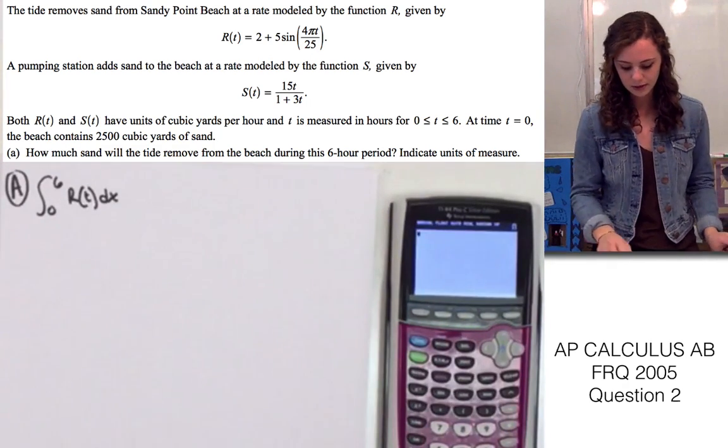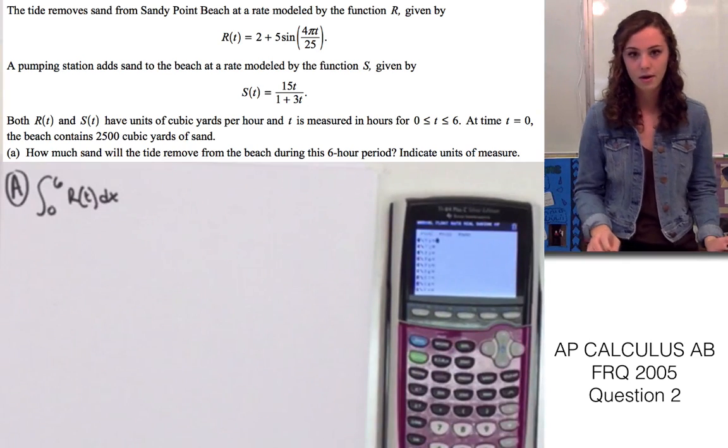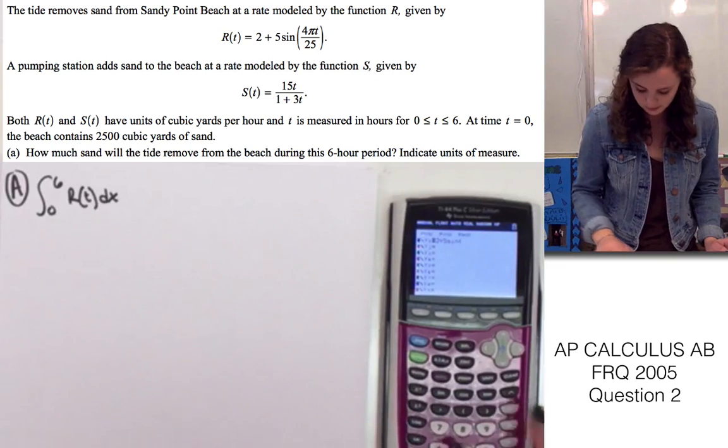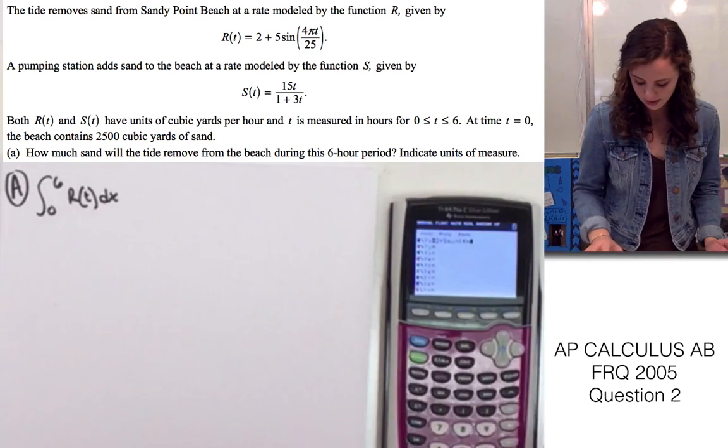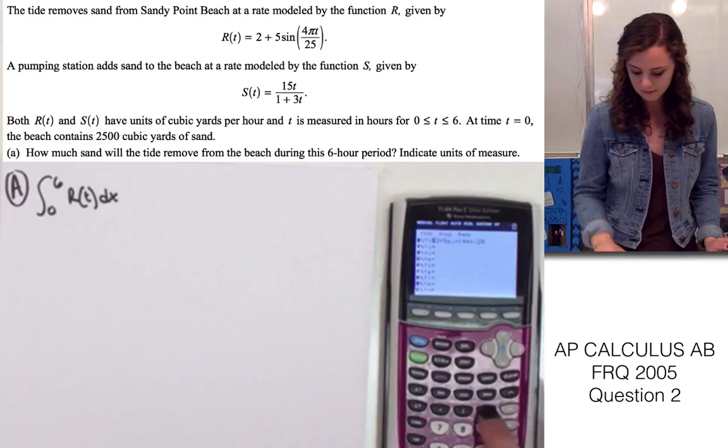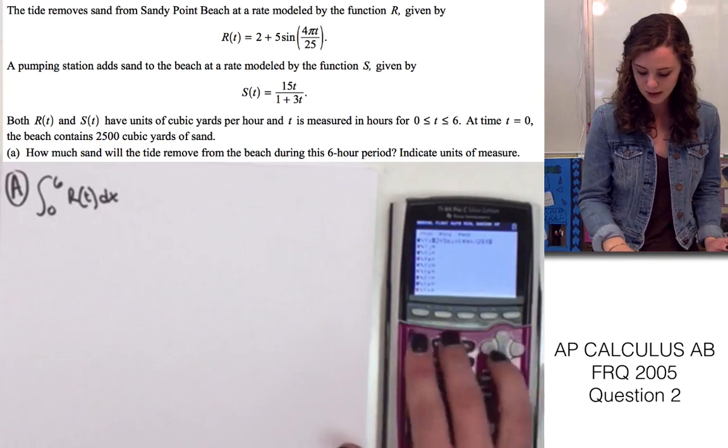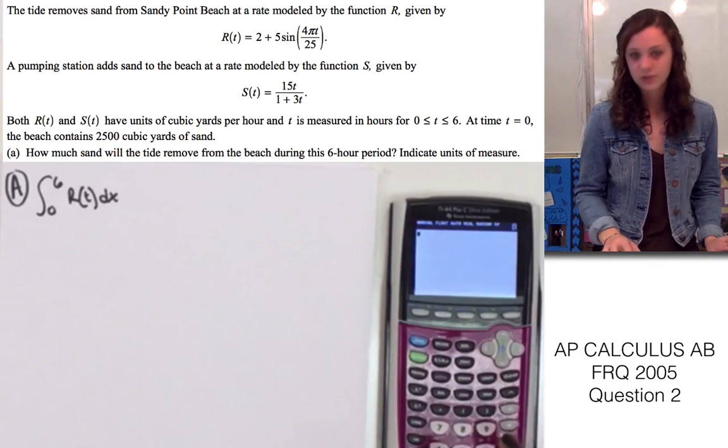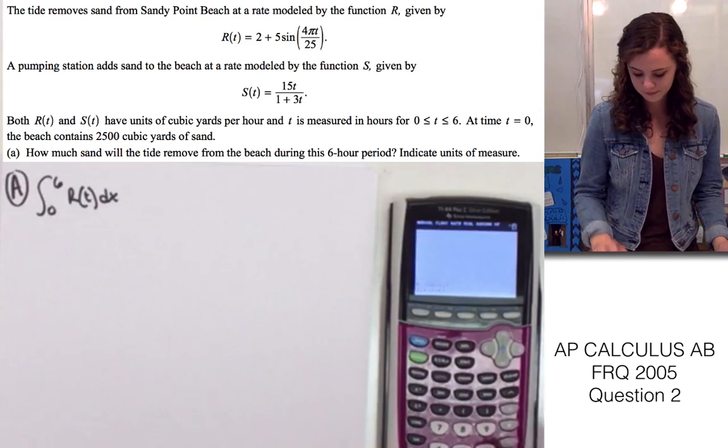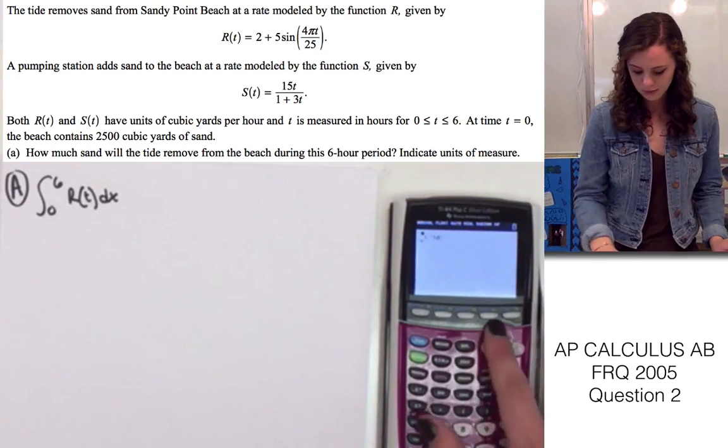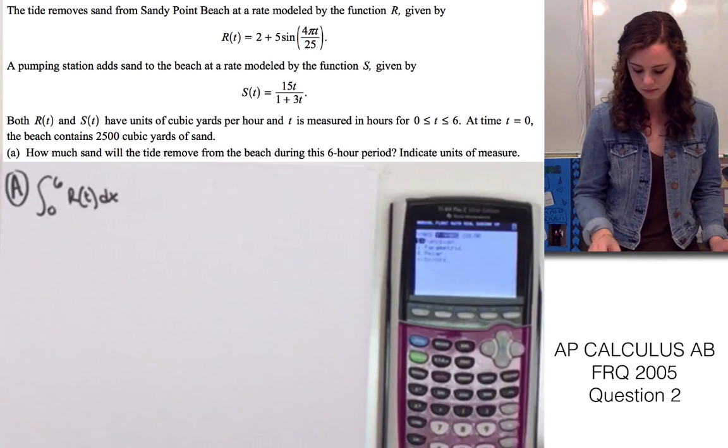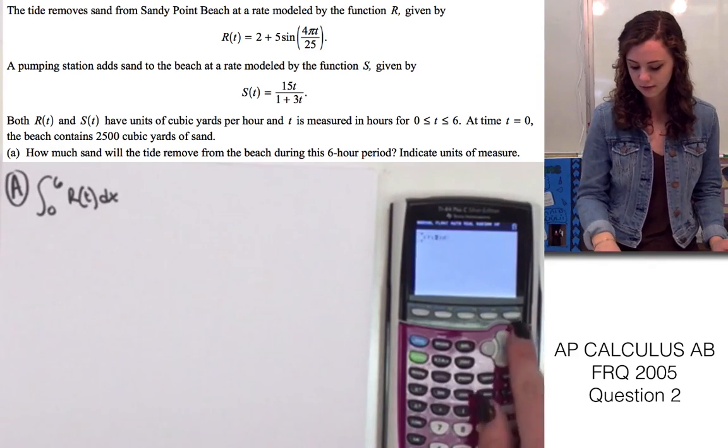We can put this into our calculator for y1, we'll put r of t. So, 2 plus 5 sine of 4 pi x over 25. Now we'll use the math function to find the integral. 0 to 6 since it's at t equals 6, and we can use y1 since we already put the function in for y1.